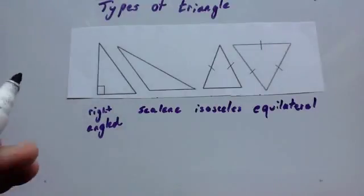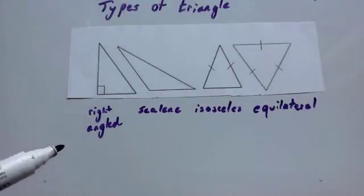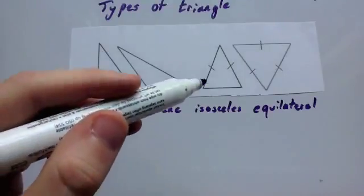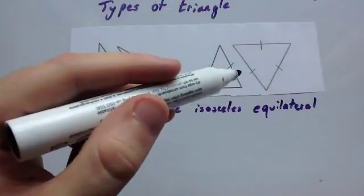Types of triangles. There's four main types of triangles that we're going to look at today. The first one's a right angle triangle. The second one's a scalene triangle. The third one's going to be an isosceles triangle. And the last one's an equilateral triangle.